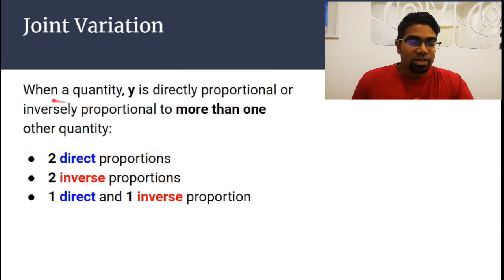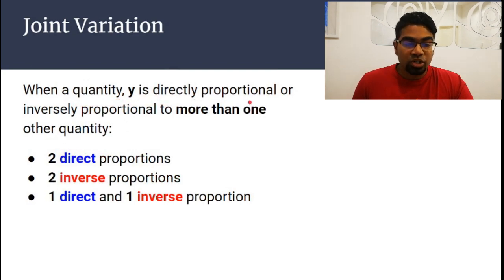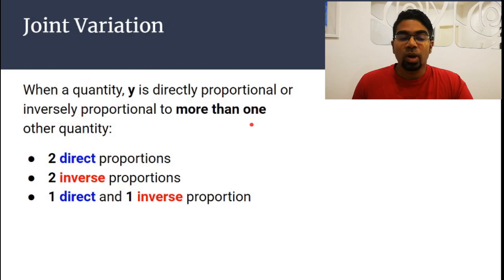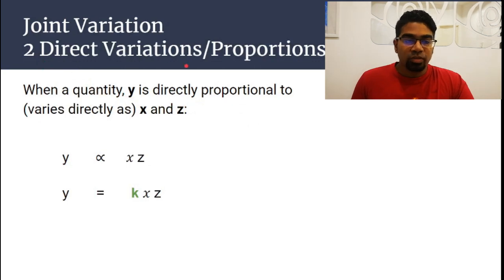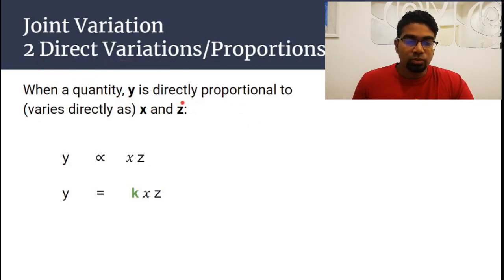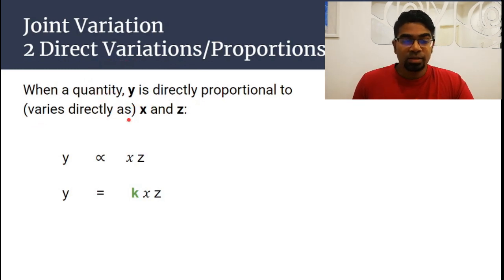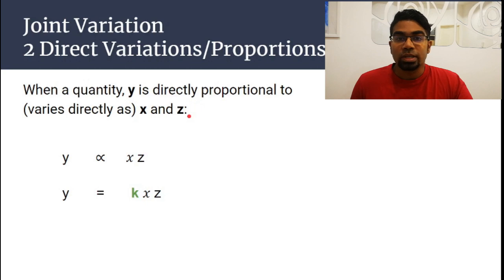What is joint variation? This can also be written as when a quantity y is directly proportional or inversely proportional to more than one other quantity. So when there are two direct variations — when a quantity y is directly proportional to, or varies directly as, x and z — these are two other quantities.